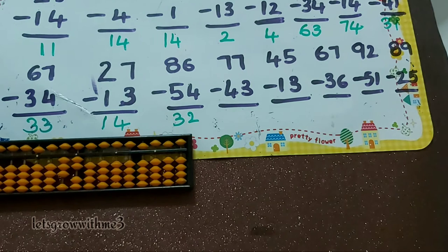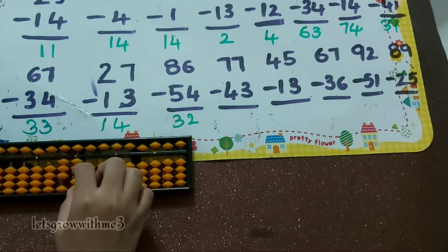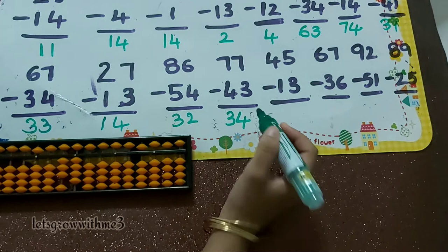Next one, 77 minus 43: minus 4, how to do minus 4? Minus 5 plus 1. Minus 3: minus 5 plus 2. So the answer is 34.